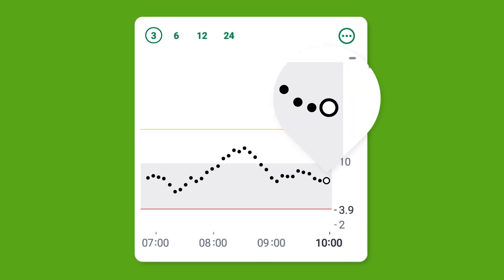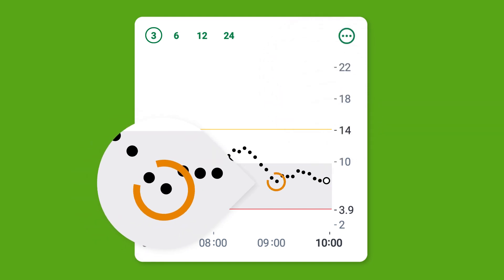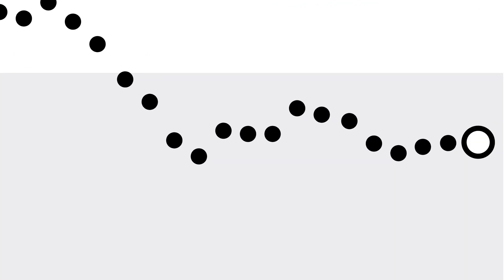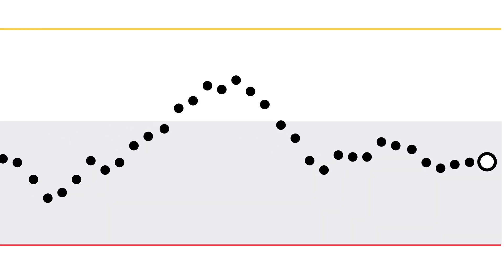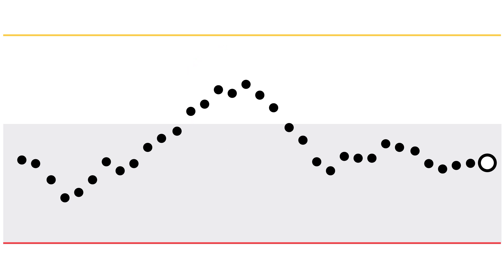The white dot is your current sensor reading. Each black dot is a past sensor reading. The grey section within the graph shows where you want your glucose to be, or your target range. If your trend dots are above or below the grey area, you were or are outside target range at that time.